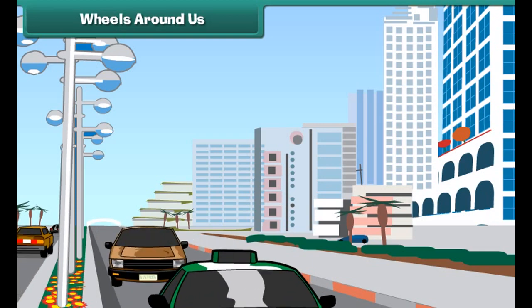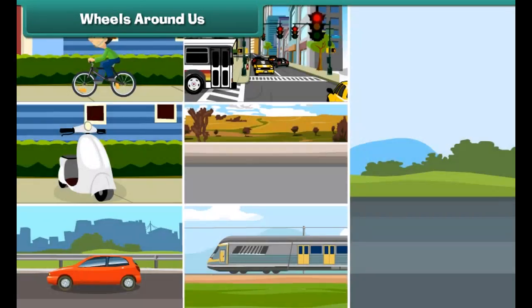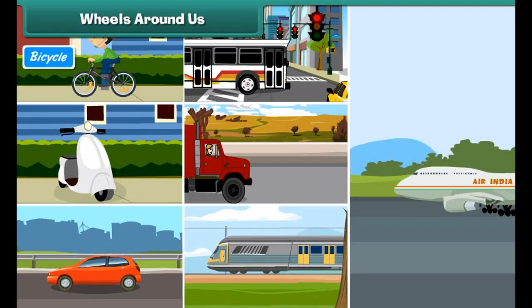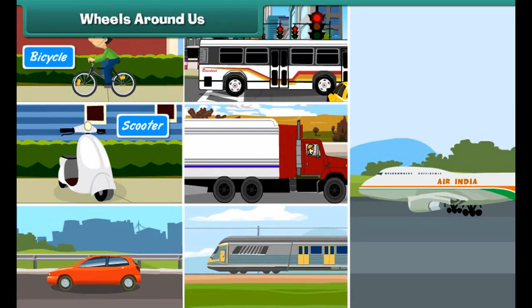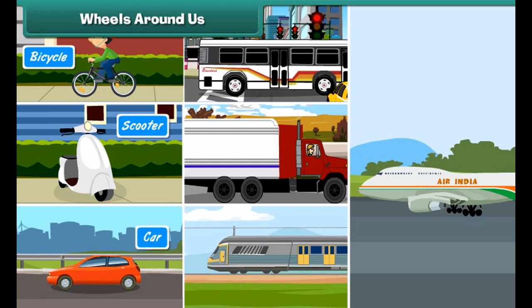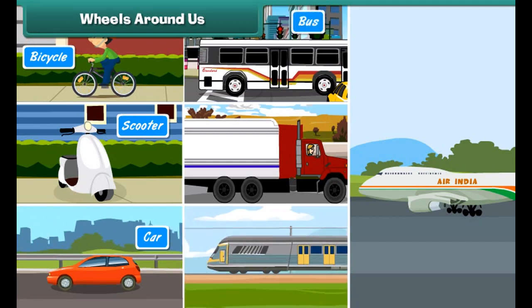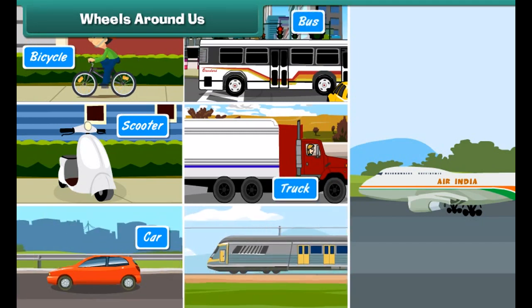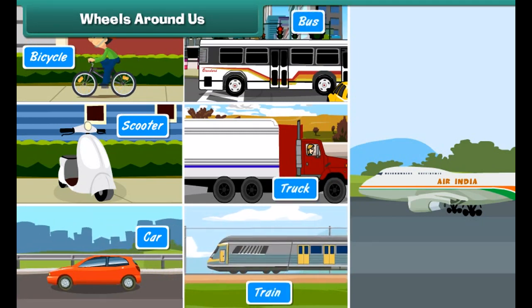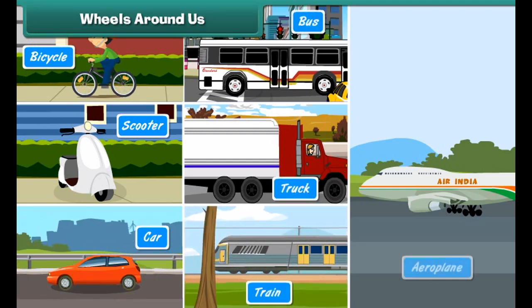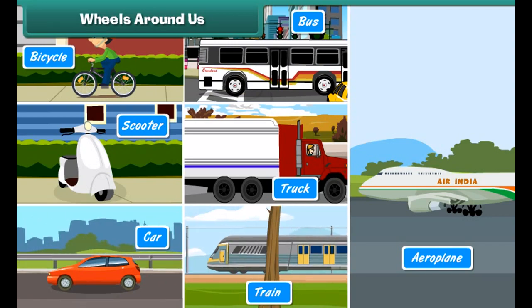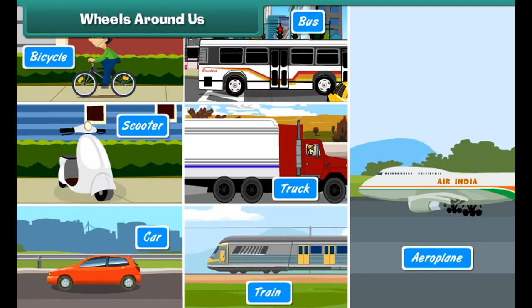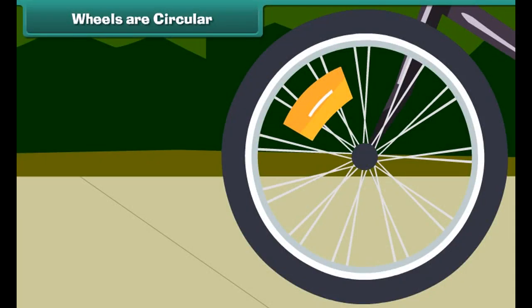Wheels around us. All vehicles that move on roads, such as bicycles, scooters, cars, buses and trucks, trains and even aeroplanes, have wheels.